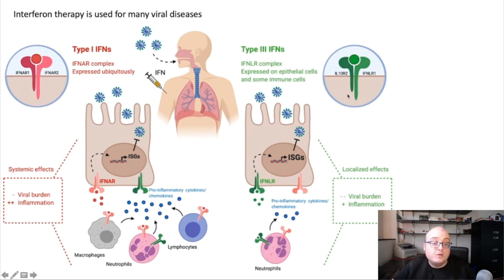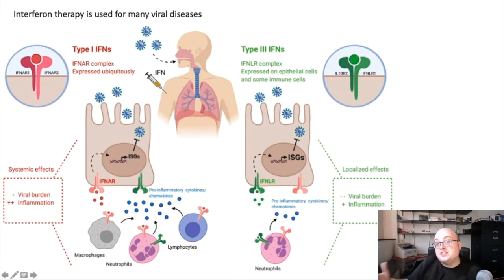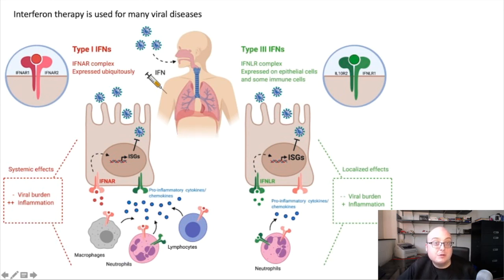Since we've discovered type 3 interferons more recently, we've begun to adapt type 3 interferon treatments targeted to sites where viruses are likely to be replicating, like epithelial surfaces. Because of the more localized expression profile of interferon lambda receptors, there's a lot less inflammation as a result of treatment with these interferons, and a lot fewer side effects. You can get all of the antiviral benefits without all of the deleterious inflammation associated with type 1 interferons. For this reason, interferon lambda is a really exciting candidate treatment for COVID-19, or SARS-CoV-2 infection, which is primarily targeted to epithelial surfaces in the respiratory tract. You can pay attention to further developments about this if you're interested.